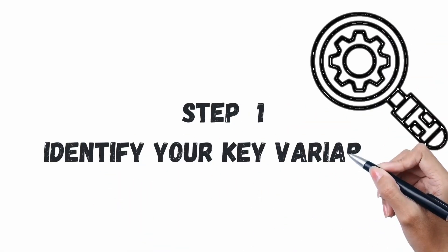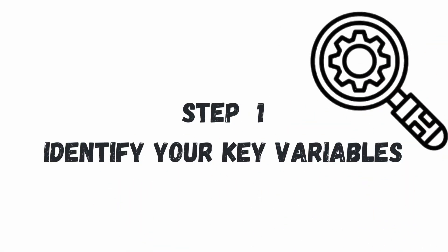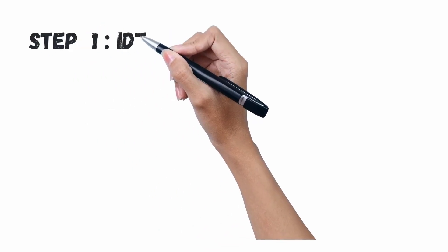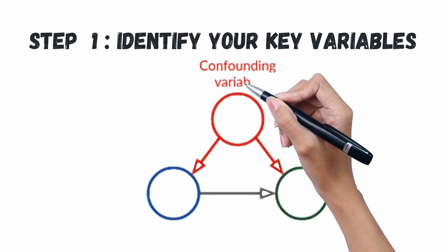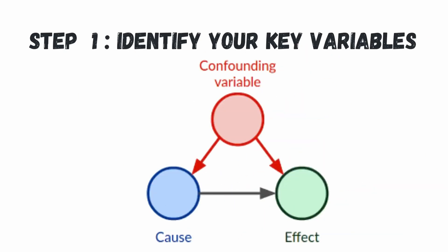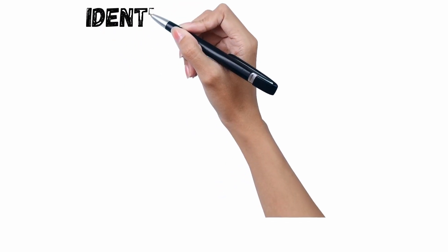A conceptual framework can be developed using three simple steps. Step one: identify your key variables. We have to identify variables into two sections — independent variables and dependent variables. To understand whether a variable is independent or dependent, you need to understand the cause and effect relationship. If a variable is causing a particular effect, it is an independent variable; whatever effect is happening is the dependent variable.